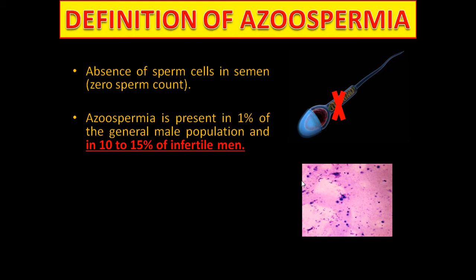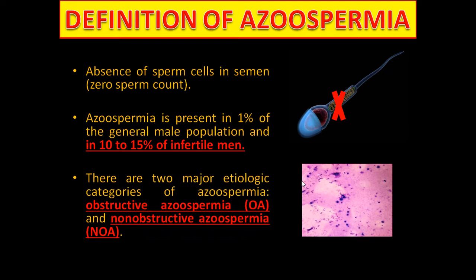Azoospermia is present in 1% of the general male population and in 10–15% of infertile men. There are two major etiologic categories: obstructive azoospermia and non-obstructive azoospermia.